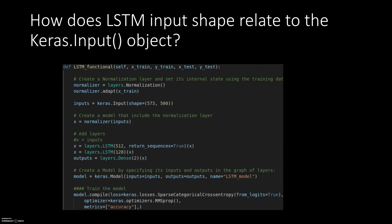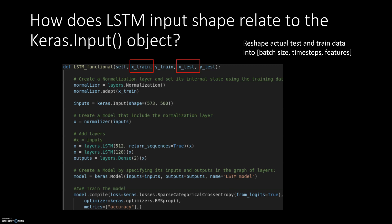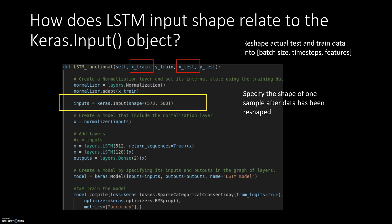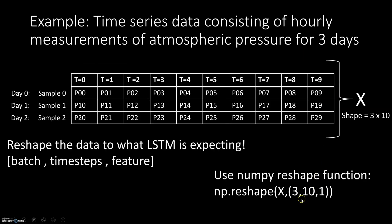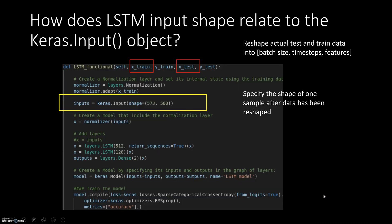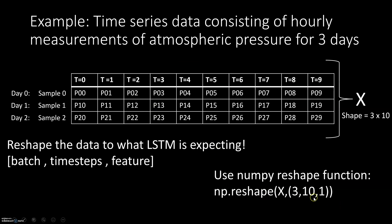Now, as I said in the beginning, how does this relate to the Keras.input object? The important thing to remember is that the reshaping we did was specifically on the test and train data — on our entire dataset. We reshape our entire dataset into batch size, time steps, and features. Then after that is done, we specify in Keras.input the shape of each sample after reshaping. So in this case, after we reshaped the data to (3, 10, 1), when we specify Keras.input we give the shape of each sample, which is (10, 1). That's how they are related.